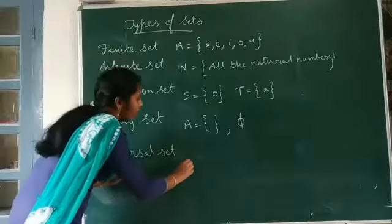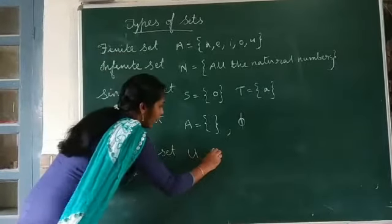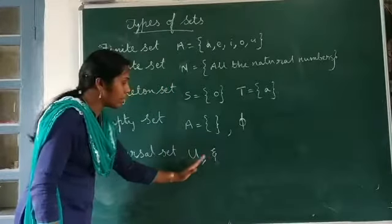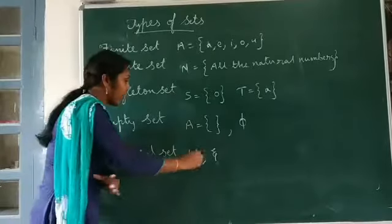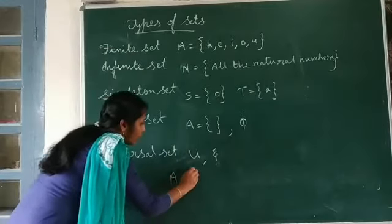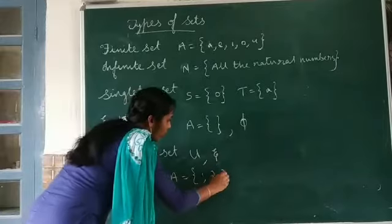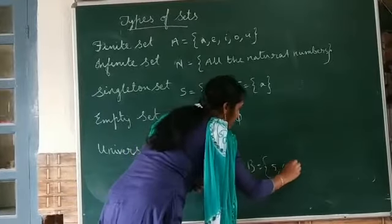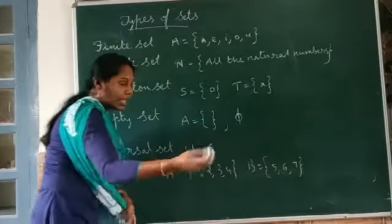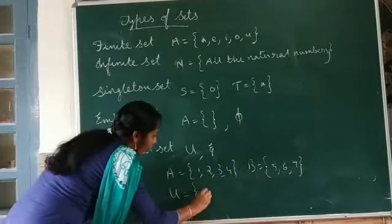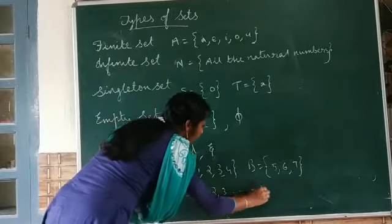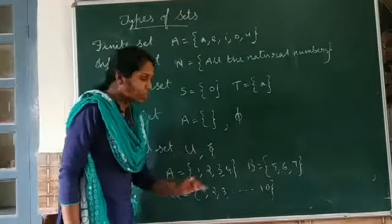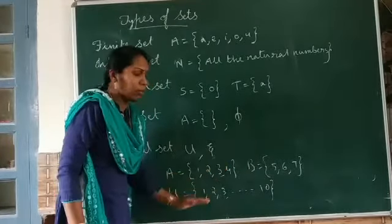The universal set can be denoted by either U or xi (ξ). These two symbols can be used to represent a universal set. For example, if we have two sets A is equal to {1, 2, 3, 4} and B is equal to {5, 6, 7}, the universal set can be considered as U is equal to {1, 2, 3, up to 10}. All the members of A and B are inside the universal set. It depends on a particular problem or a particular situation.